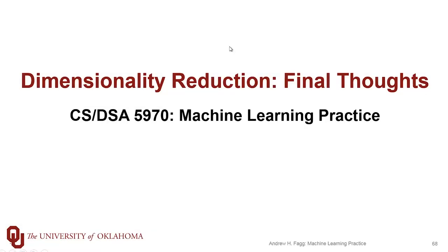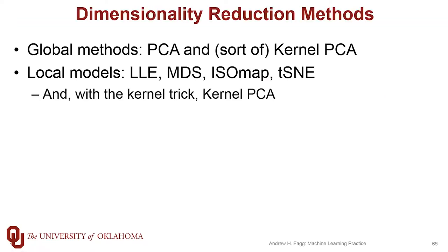We've now talked about a whole variety of different approaches to doing dimensionality reduction. We've talked about both global methods and local methods. Principal component analysis is definitely a global method in the sense that it tries to build one monolithic model that works for the entire feature space. In some sense, kernel PCA also does this.